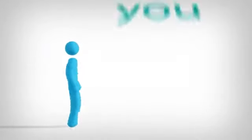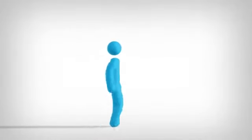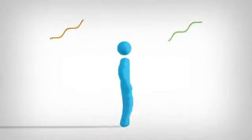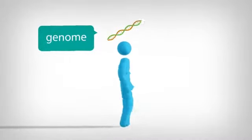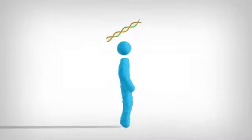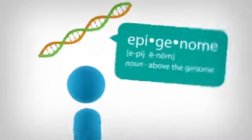This is the story of you. Who you are started with DNA inherited from your mom and dad. Your DNA makes up your genome, the genetic blueprint that makes you you. Turns out there's a higher level of complexity called the epigenome.